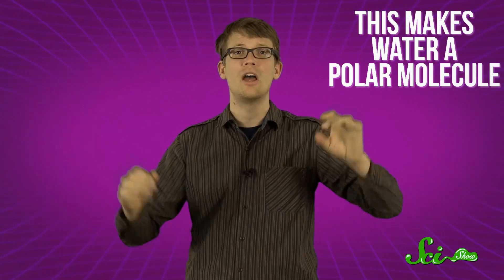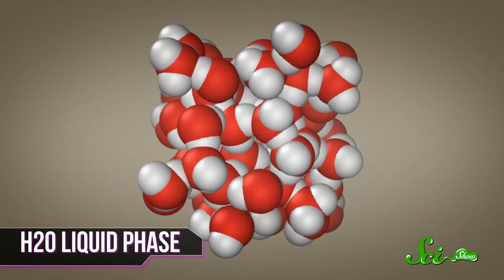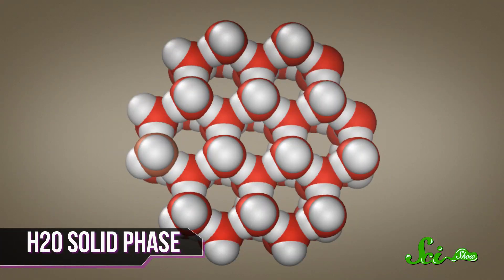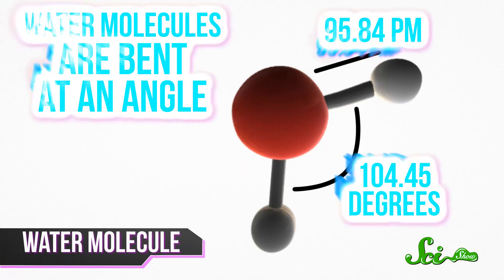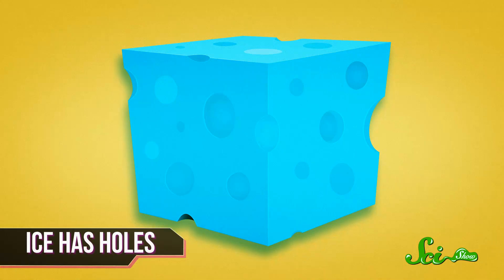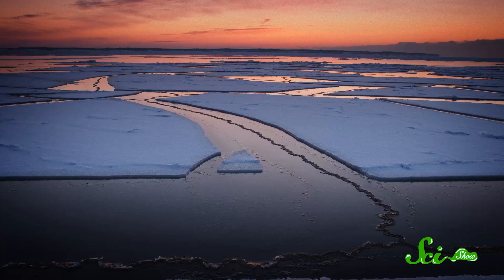A lot of water's coolest and most useful properties come from this polarity. When water is in its liquid phase, its molecules, like in all liquids, are randomly organized. But as the water cools, the molecules get closer together, and starting around four degrees Celsius, they get close enough that the positive and negative areas start attracting each other, and they snap into a rigid structure. Because water molecules are bent at an angle, when they line up like this, the structure they form leaves little holes between them, which makes the structure less dense. Those tiny holes are the entire reason that solid water floats on top of its liquid form.